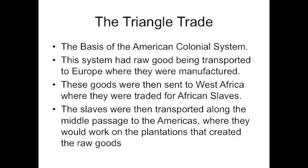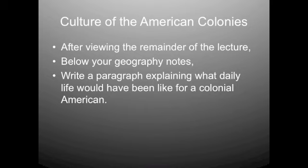The largest raw goods transported were things like sugar and tobacco. What people in the Americas wanted back were manufactured furniture, textiles, and clothing. After viewing the remainder of the lecture, below your geography notes, write a paragraph explaining what daily life would have been like for a colonial American.